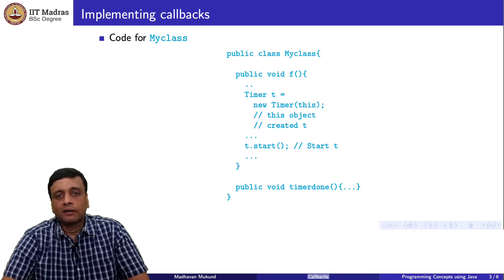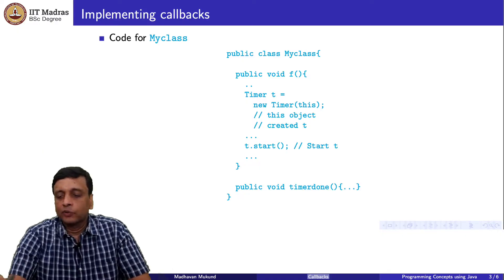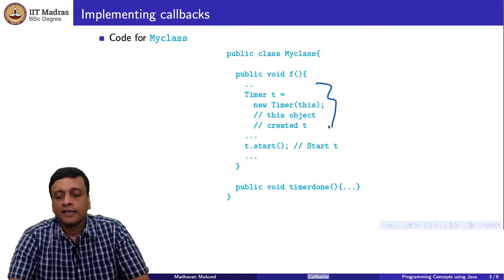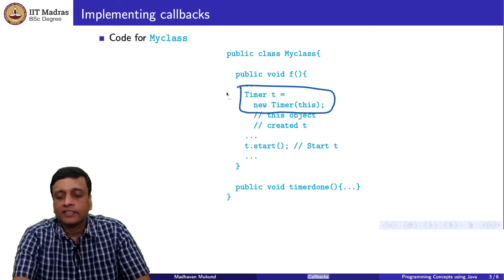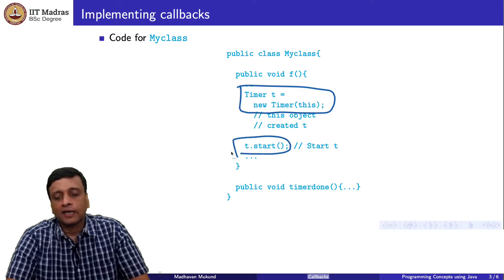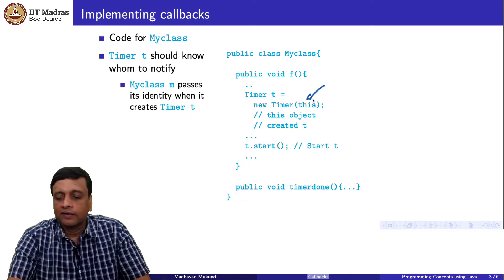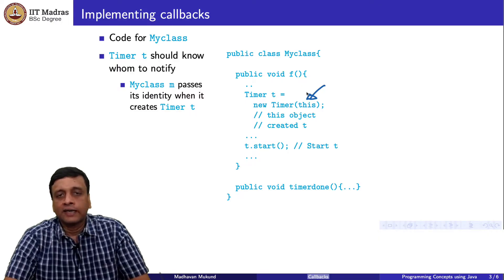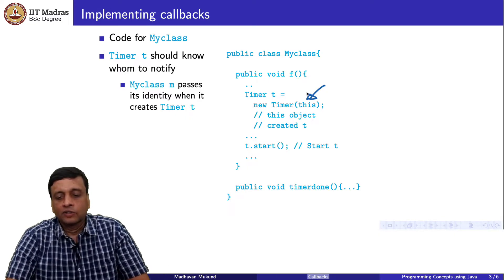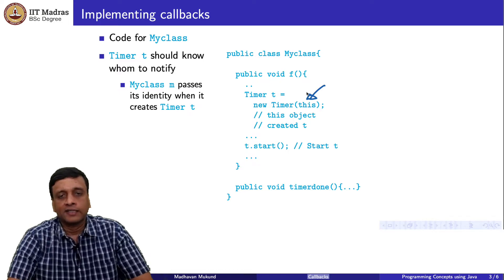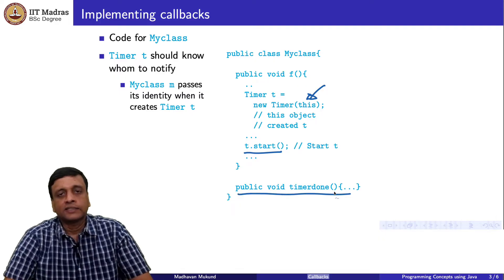Here is some plausible code for my class. Some function running inside my class at some point creates a new timer and starts it. Timer is a class it knows about. It is trying to tell the timer that this is the object that created it, because the timer needs to know which object to notify at the end of its execution. So it passes this object — its own identity — through the parameter of the timer's constructor. It starts the timer off, and it has a separate implementation of the function which the timer is supposed to call when it finishes. So timer done is provided as a function inside my class.